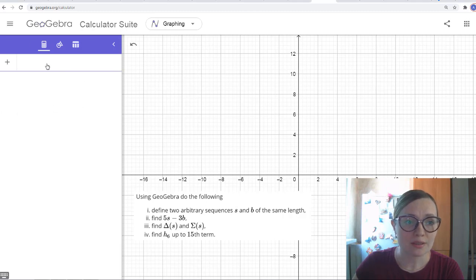We go to the algebra mode, and we choose any name of the sequence. Let's say s is the sequence, equality sign, and we will use the curly brackets, and we list the terms of the sequence. For example: